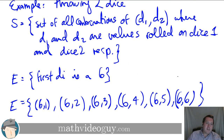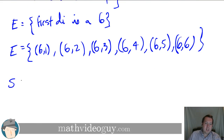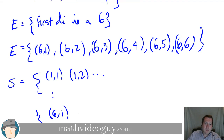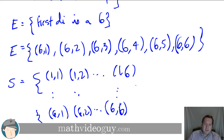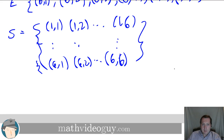E is a subset of S because S contains all possible outcomes, starting from (1,1), (1,2), all the way down to (6,6). Now that we know what an event and a sample space are, we want to look at what the probability of an event is.